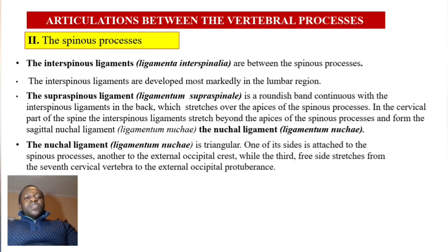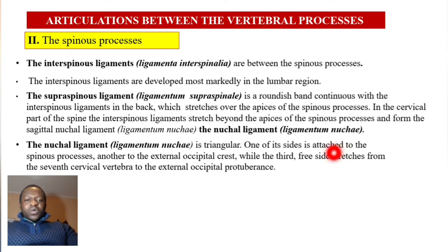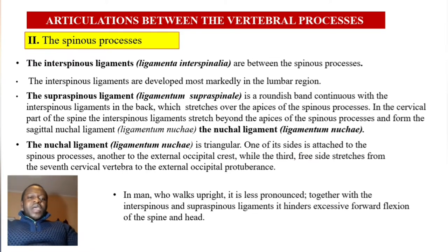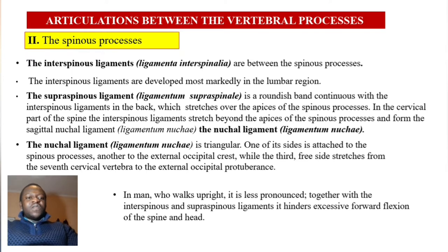The nuchal ligament is triangular: one of its sides is attached to the spinous processes, another extends to the external occipital protuberance, while the third side is free — stretching from C7 to the external occipital protuberance, making a triangle. In humans who walk upright it is less pronounced. Together with the interspinous and supraspinous ligaments, the nuchal ligament hinders the excessive forward deflection of the spine and head.